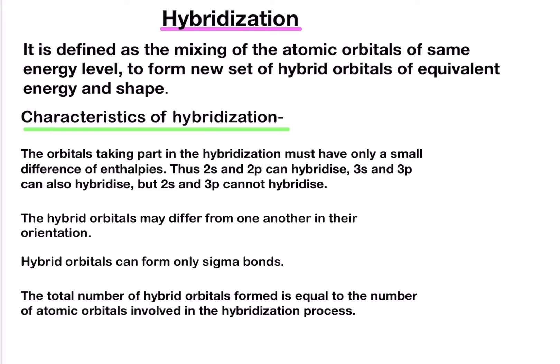There is a large difference in energy between 2s and 3p. The hybrid orbitals may differ from one another in their orientation. Hybrid orbitals can form only sigma bonds. The total number of hybrid orbitals formed is equal to the number of atomic orbitals involved in the hybridization process.